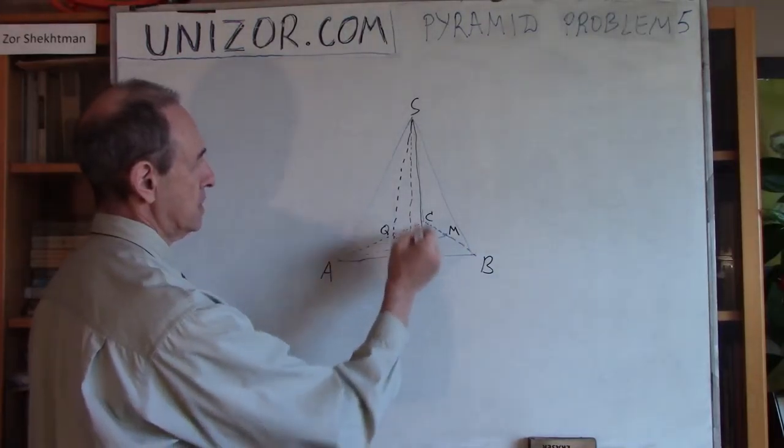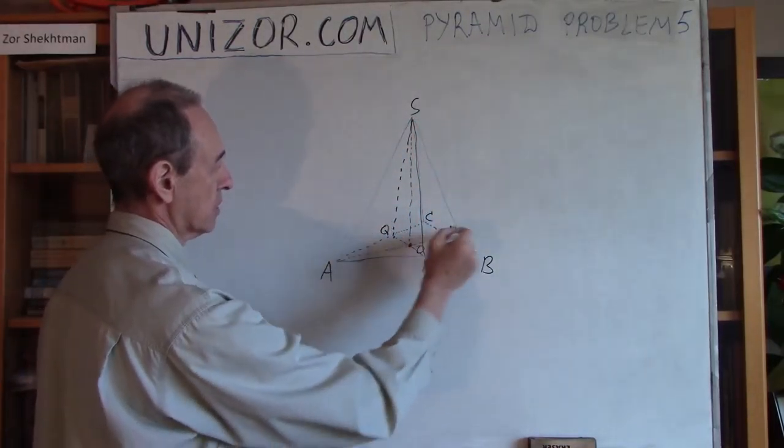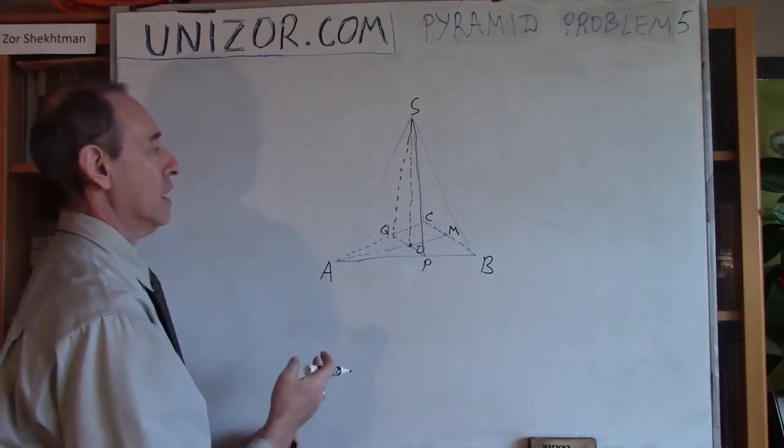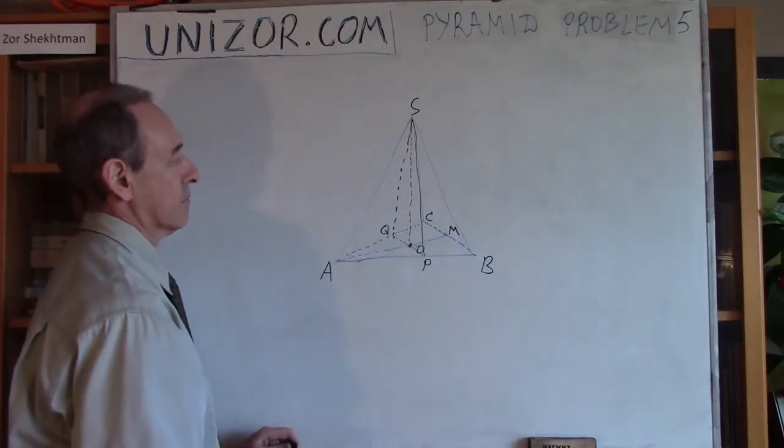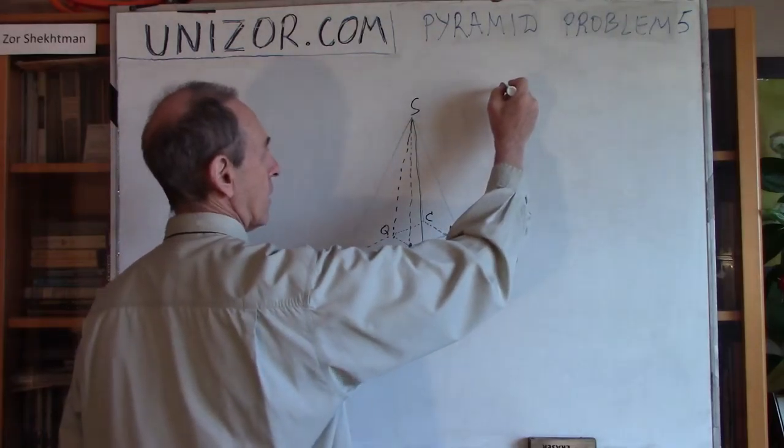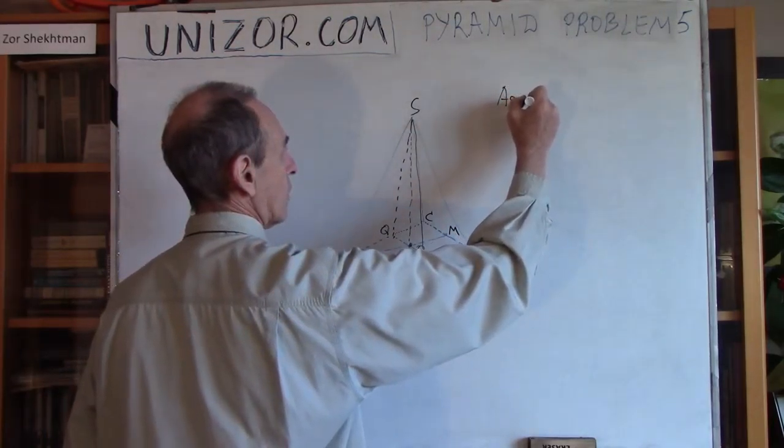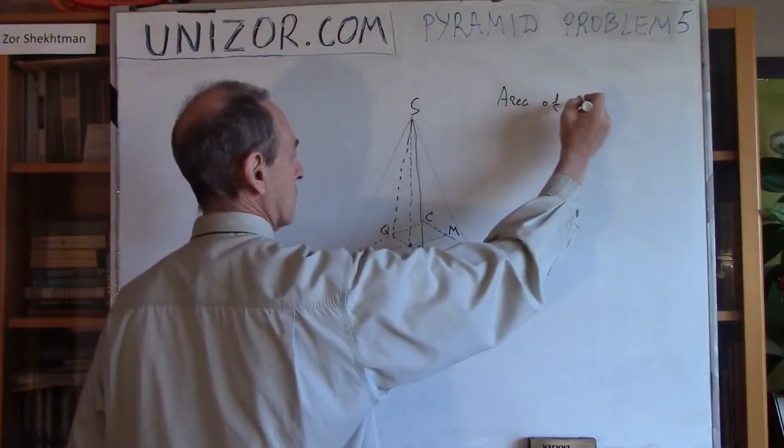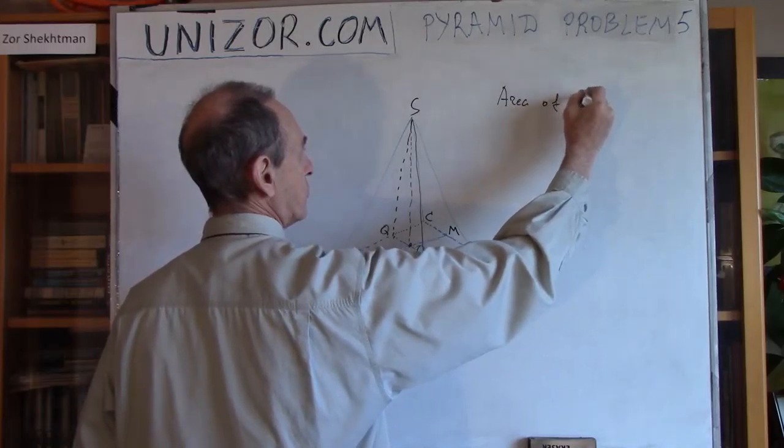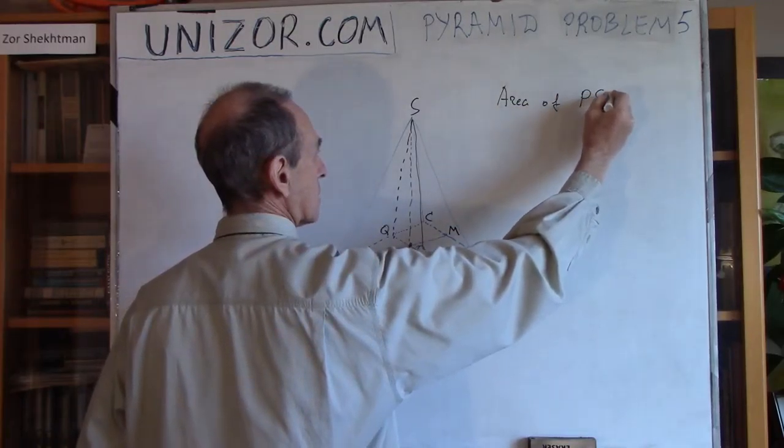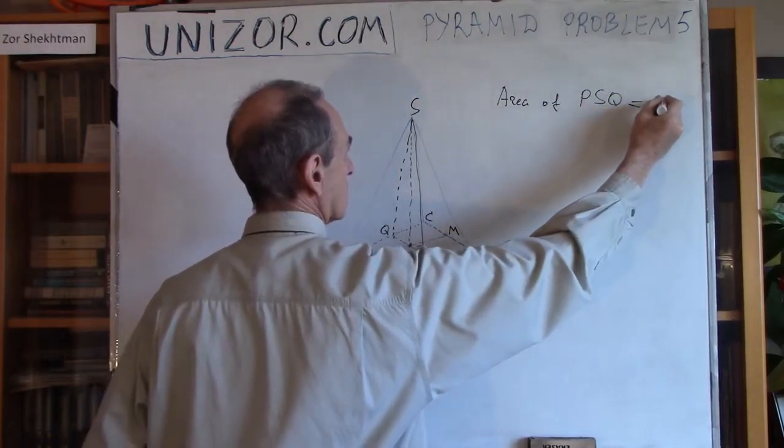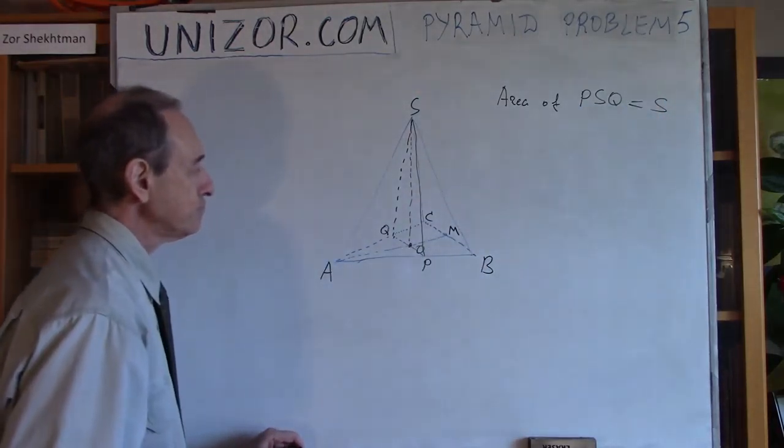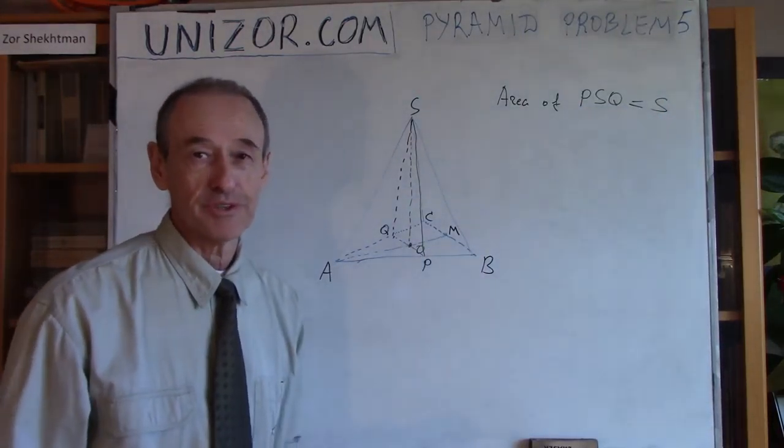So plane PSQ is perpendicular to AM. Now, it's a triangle, and it has certain area, so area of PSQ equals, let's call it S. That's not what we have to determine.